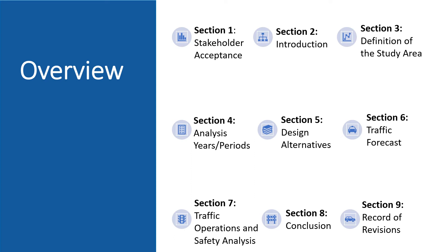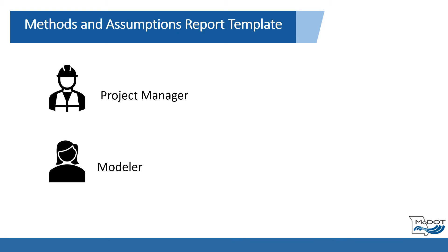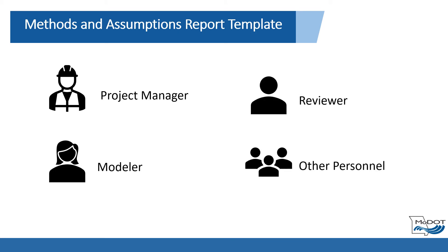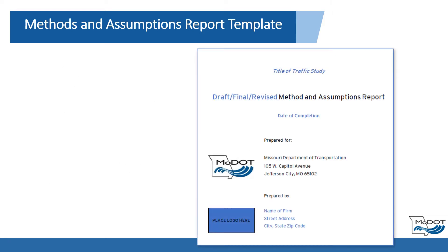The intent of this module is to inform the TIA Methods and Assumptions report. The sections in this module correspond with the section numbers of the Methods and Assumptions report. It is important for the project manager, modeler, reviewer, and other involved personnel to develop an effective plan for conducting the necessary analysis. All parties must also agree on assumptions to be made to complete the analysis. Therefore, MoDOT may require a Methods and Assumptions report to be drafted and agreed upon by MoDOT and shared with stakeholders for all traffic impact analyses.